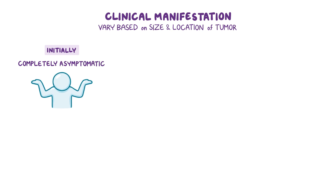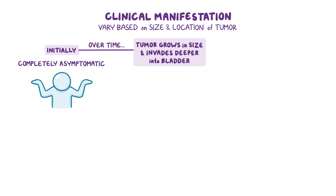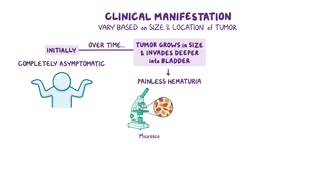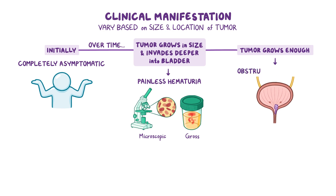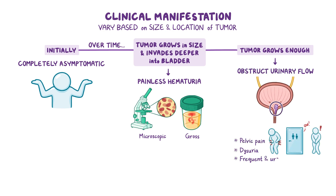Clinical manifestations of bladder tumors vary based on the size and location of the tumor. Initially, clients can be completely asymptomatic. Over time, as the tumor grows and invades deeper, clients may experience painless hematuria, which can be microscopic or gross. If the tumor obstructs urinary flow, it can cause pelvic pain, dysuria, and frequent and urgent urination. Sometimes a large bladder tumor can even be palpated in the lower abdomen.